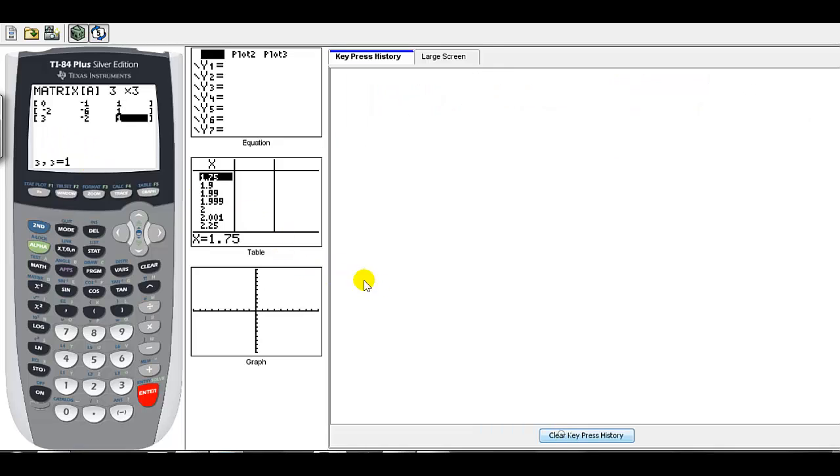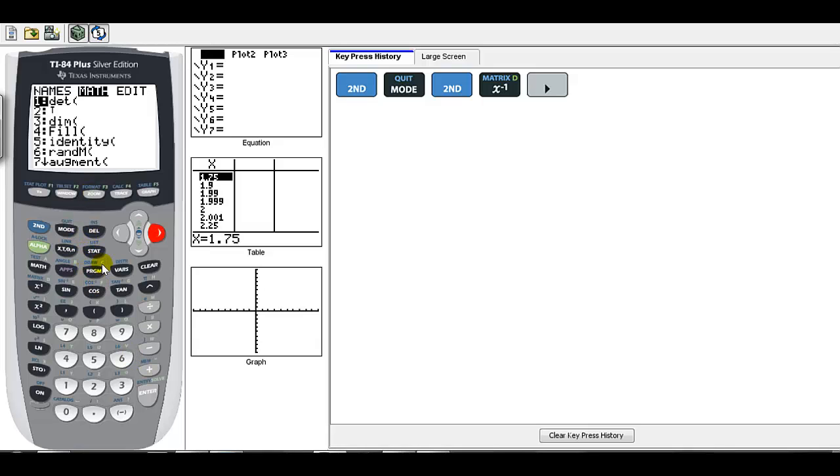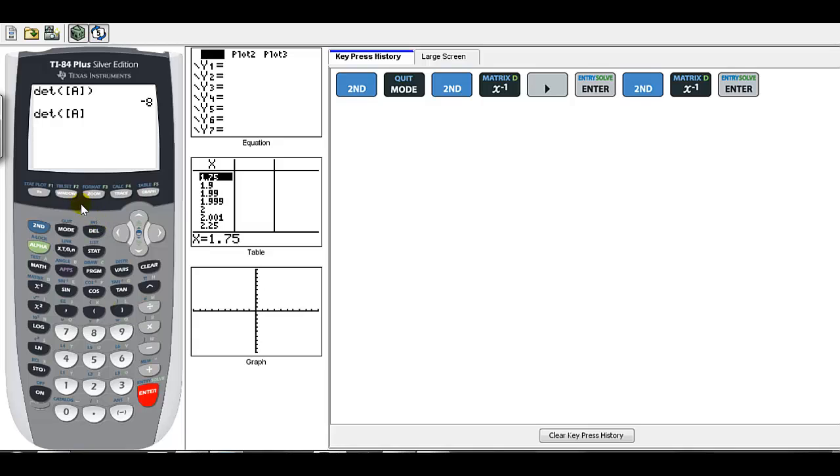Go back to the home screen. To bring up determinant A: second, x to the negative 1, we want to do some math with our determinant. Cut and paste A - go to second matrix again, name of A, close your parenthesis, press enter. Remember we had to multiply by one half, so divide that by 2. Press enter - that's the answer we got on the slides.